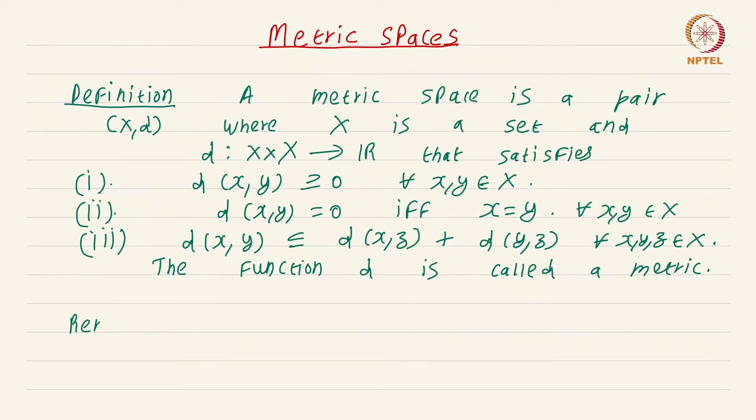Remark: As is customary, we will use phrases like 'X is a metric space.' We will do this whenever the underlying function d is clear from context and there is no scope for ambiguity. In situations where there could be multiple metrics on the same set, we shall be more precise by saying let (X, d₁) be one metric space and (X, d₂) be the second metric space.